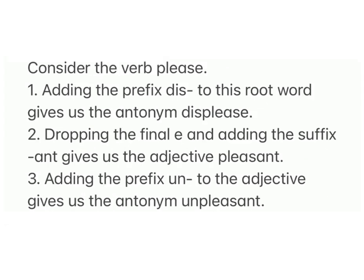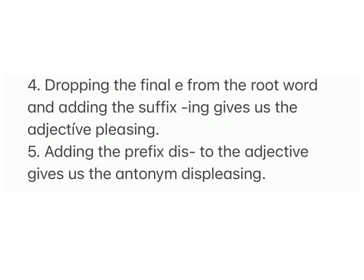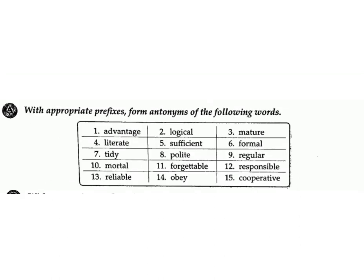One: adding the prefix 'dis' to this root word gives us the antonym 'displease.' Two: dropping the final 'e' and adding the suffix '-ant' gives us the adjective 'pleasant.' Three: adding the prefix 'un' to the adjective gives us the antonym 'unpleasant.' Four: dropping the final 'e' from the root word and adding the suffix '-ing' gives us the adjective 'pleasing.' Five: adding the prefix 'dis' to the adjective gives us the antonym 'displeasing.' A: with appropriate prefixes, form antonyms of the following words.